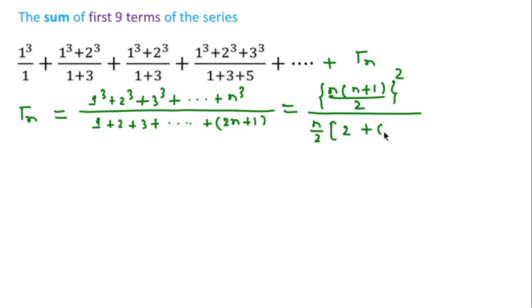Now if we take 2 common in these two terms, then this 2 and this 2 get cancelled.